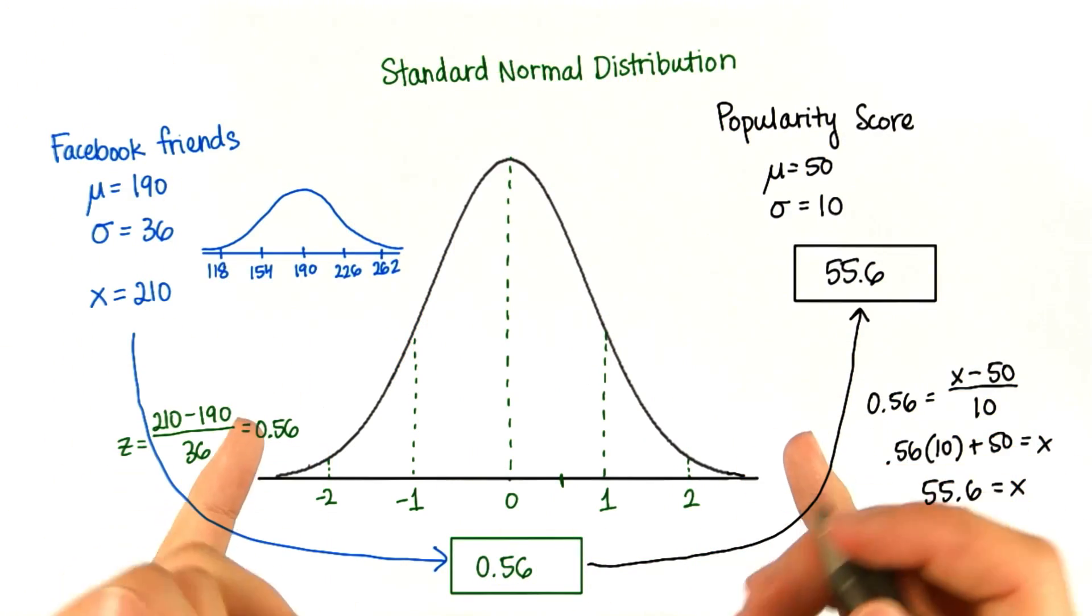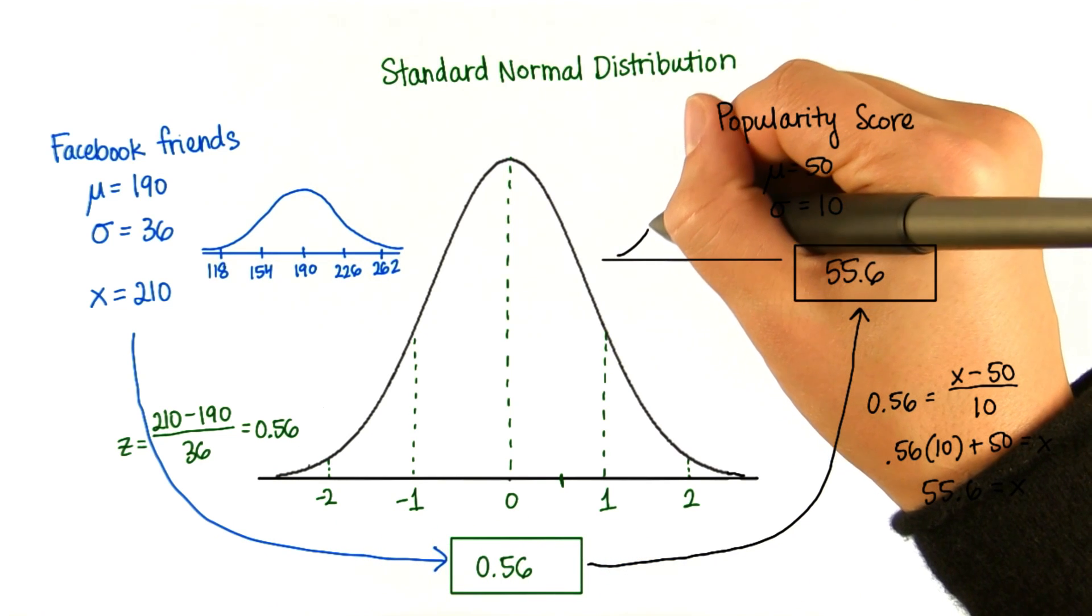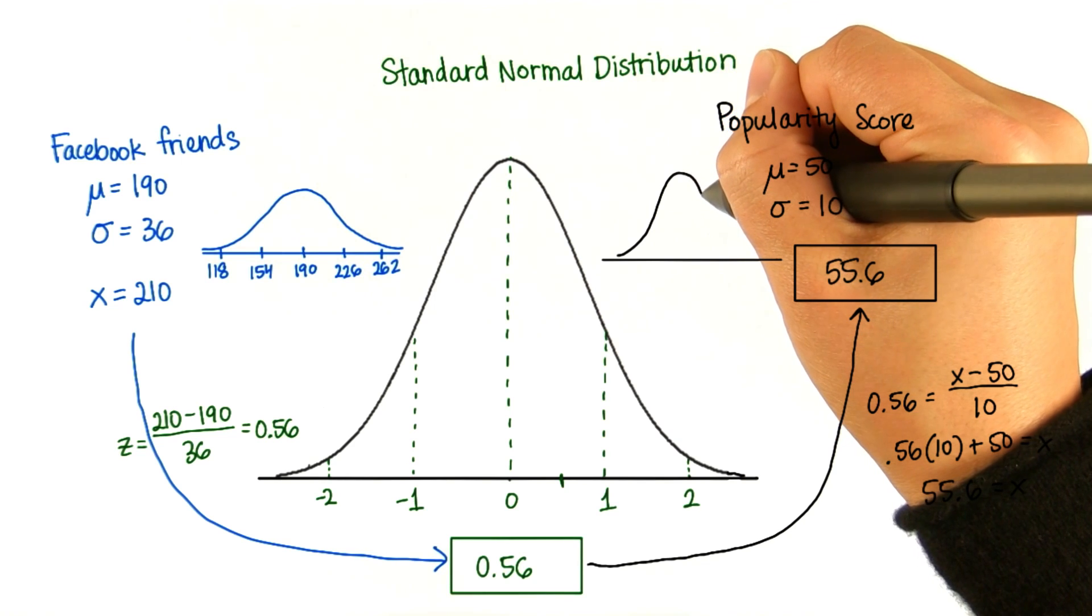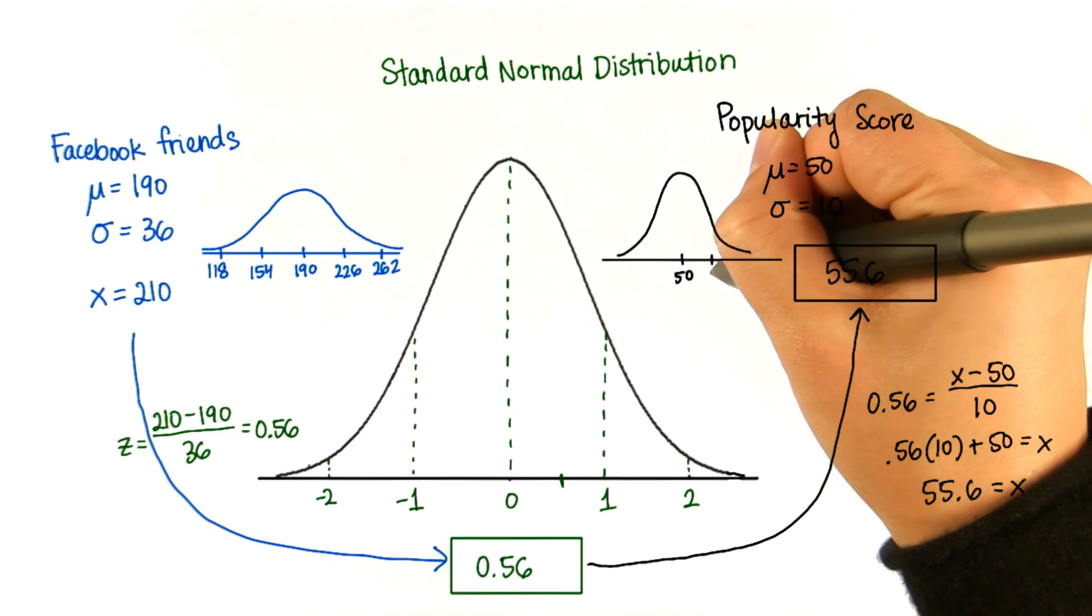We converted it to the standard normal distribution with mean of 0 and standard deviation 1, and then we converted that to a normal distribution with mean of 50 and standard deviation 10.